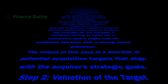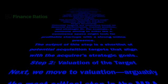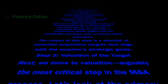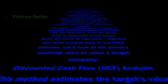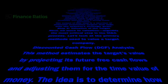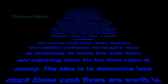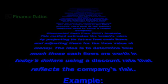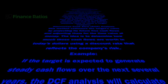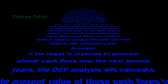Step 2: Valuation of the Target. Next, we move to valuation, arguably the most critical step in the M&A process. Discounted Cash Flow (DCF) Analysis estimates the target's value by projecting its future free cash flows and adjusting them for the time value of money — determining how much those cash flows are worth in today's dollars using a discount rate that reflects the company's risk. For example, if the target is expected to generate steady cash flows over the next several years, the DCF analysis will calculate the present value of those cash flows to assess the company's intrinsic value.